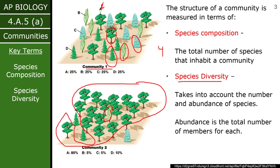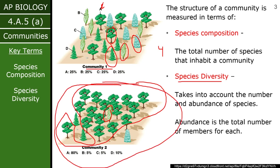Whereas in community one up top, it's evenly distributed. Community two has much less of species B, C, and D. So we need to start thinking about how this community might be considered less diverse, because it is mostly one species and just a little bit of others.